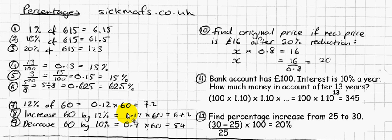If you really want to, you can simply work out 12% of 60 and then add it to 60. You would get the same answer — no problem.